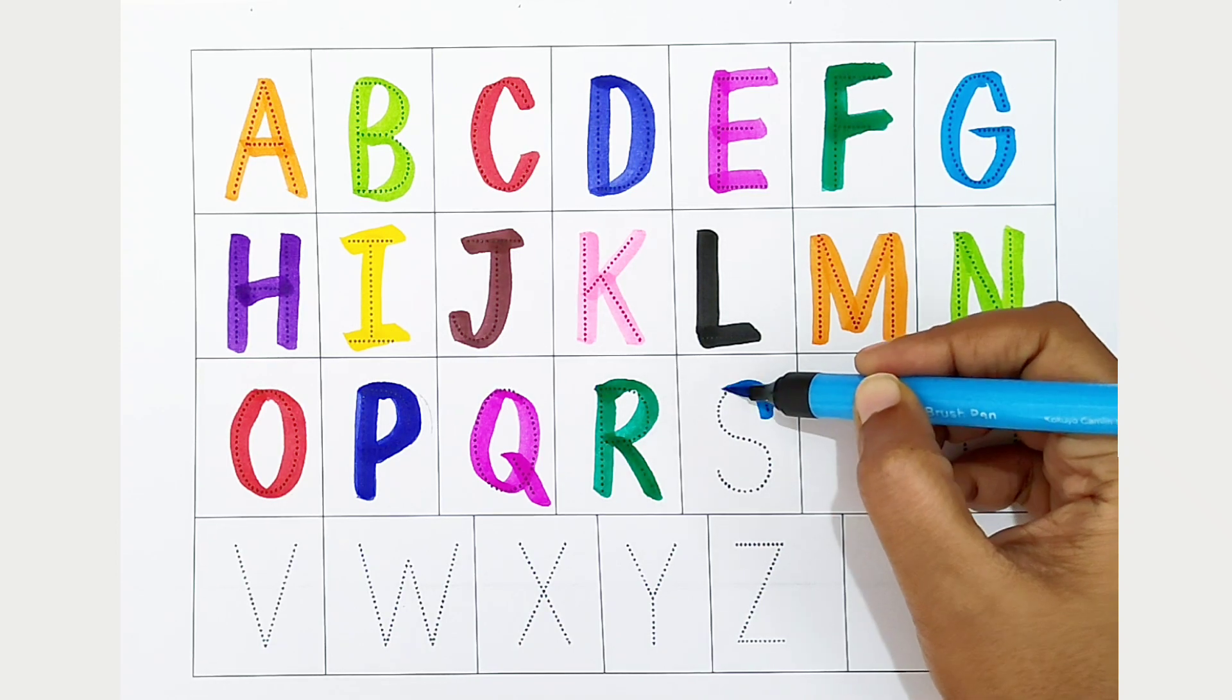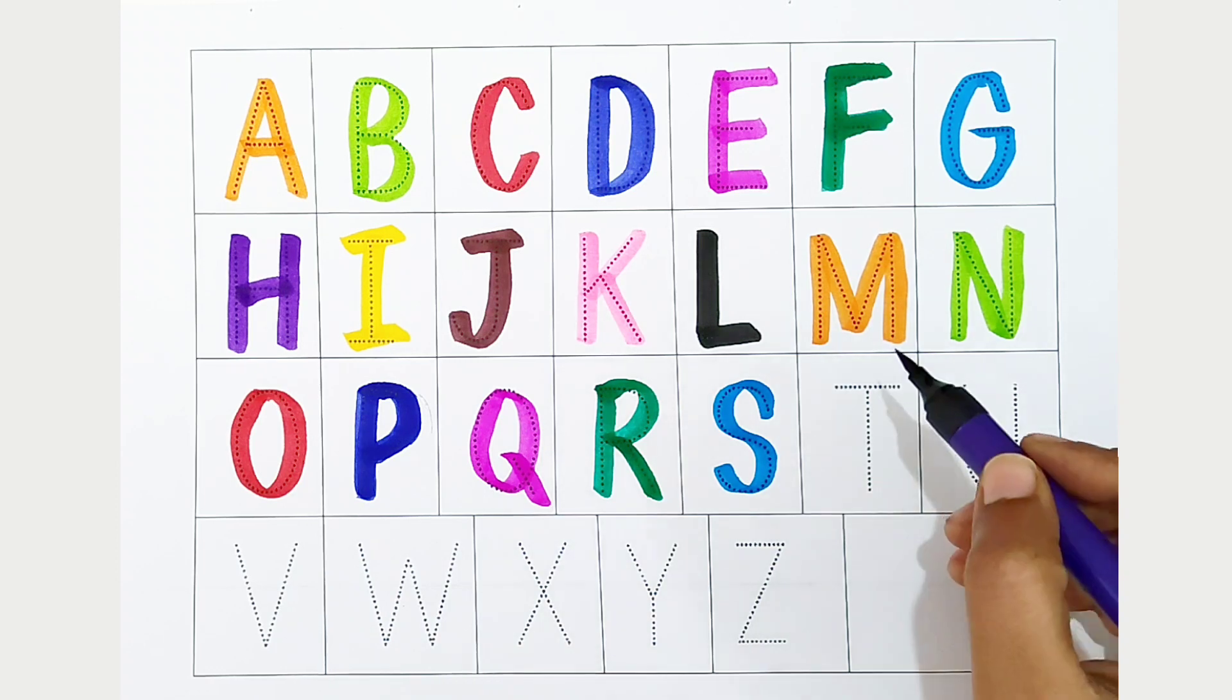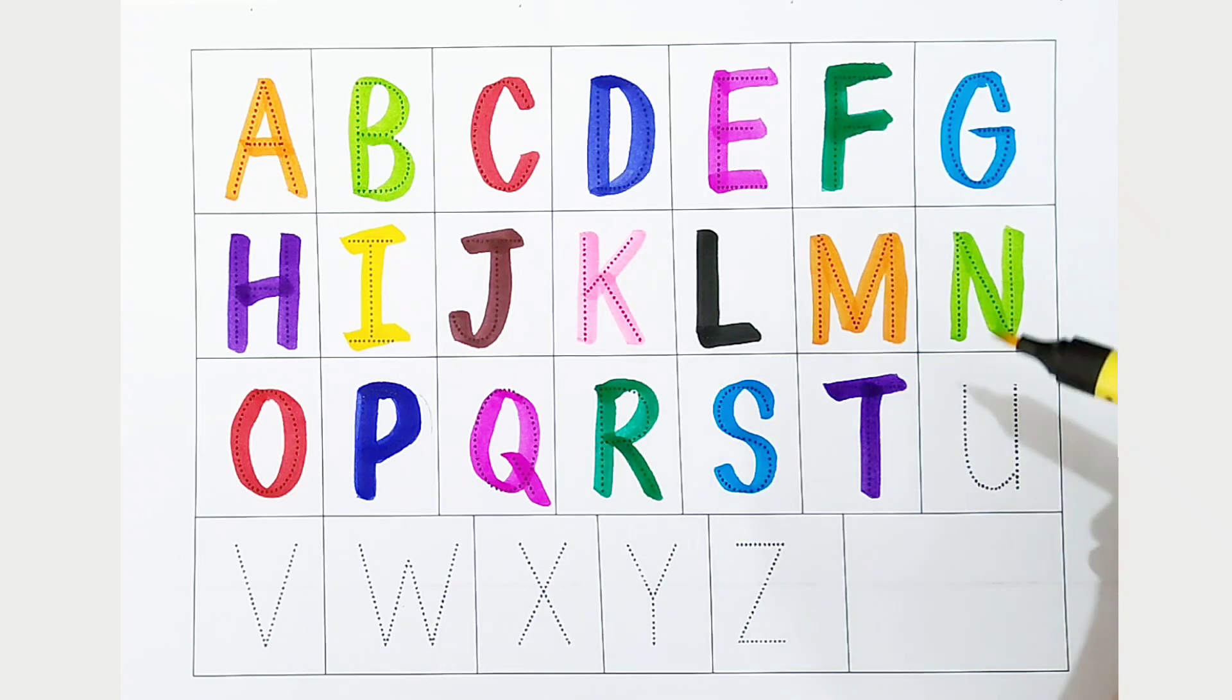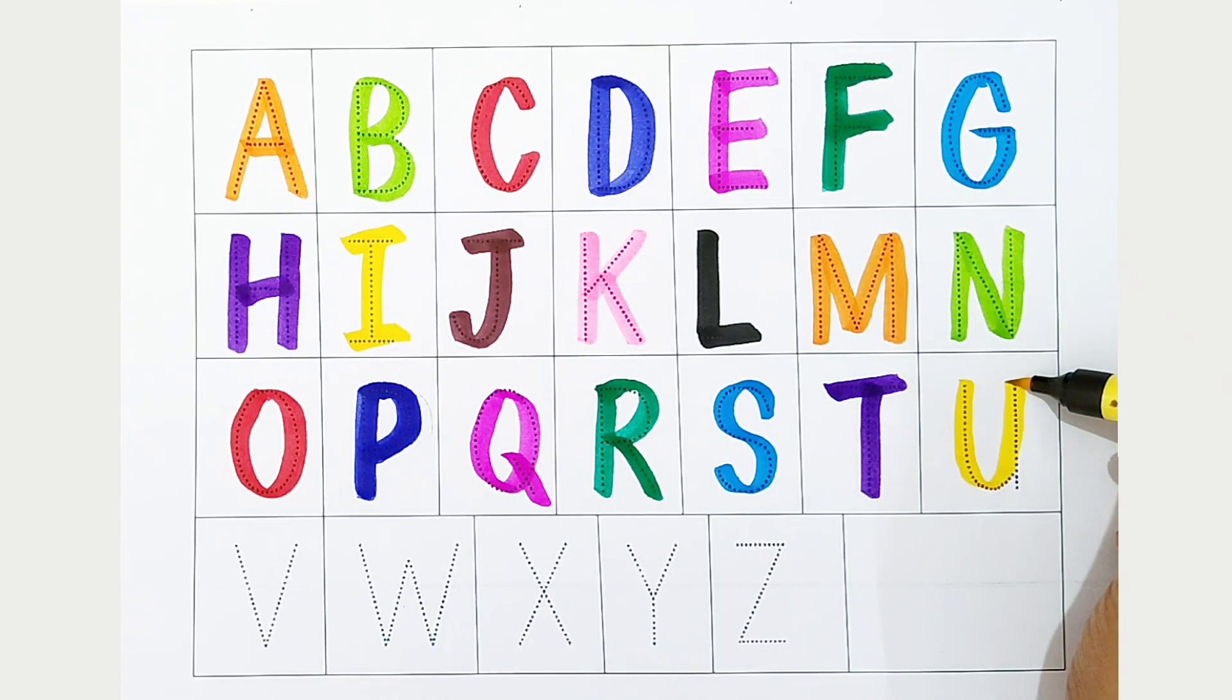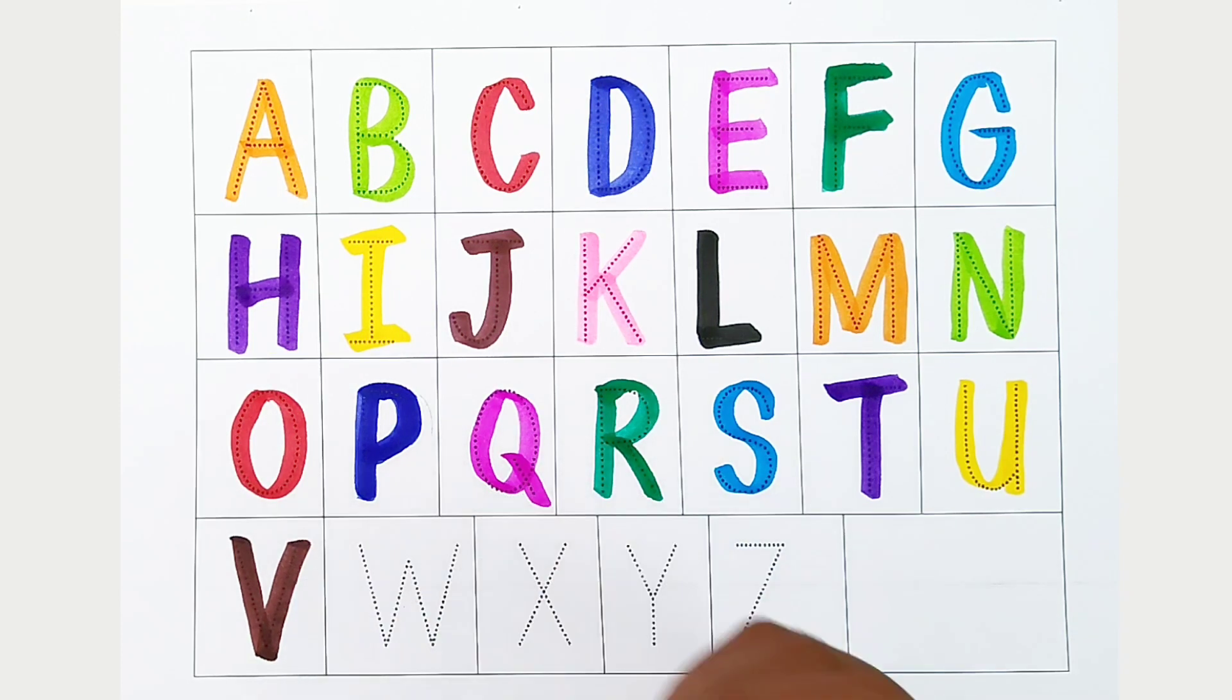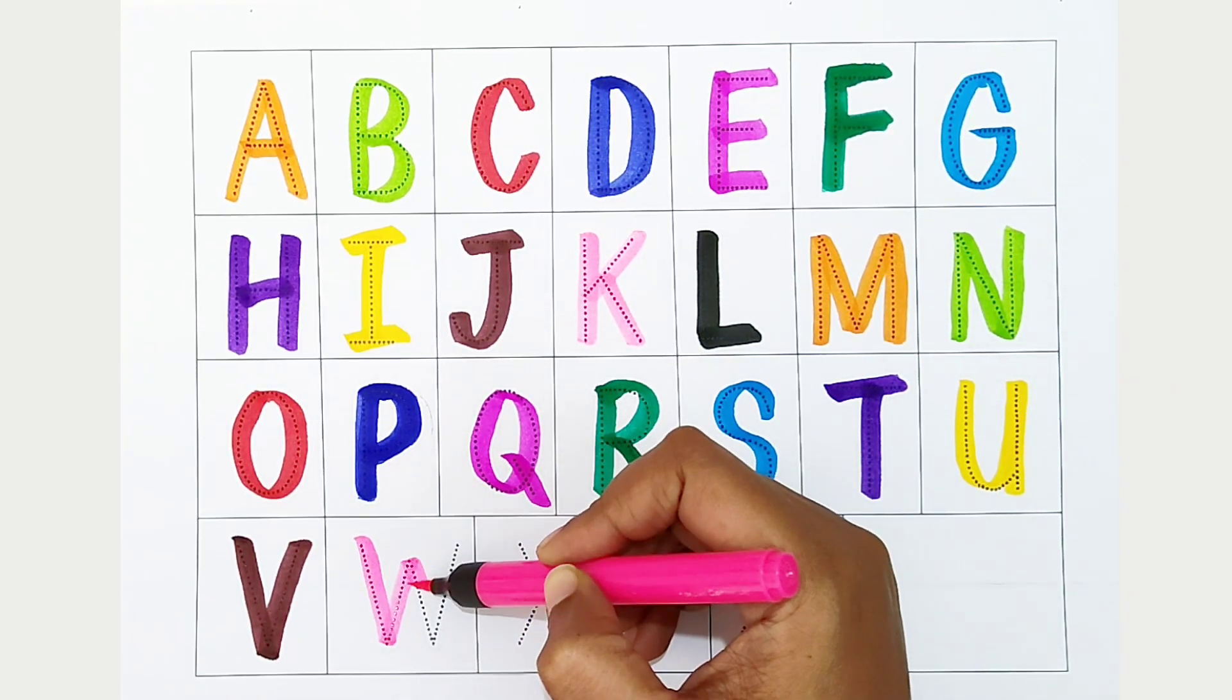S, light blue color. S is for sunshine. T, violet color. T is for tiger. U, yellow color. U is for unicorn. V, brown color. V is for vertex. W, light pink color. W is for water.